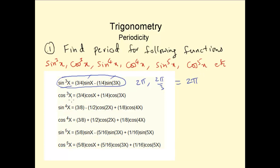Similarly, cos³x: the period for cos³x would be the LCM of the period of cosx and the period of cos3x. The period for cosx is 2π and the period for cos3x is 2π/3. So the period of the whole function cos³x would be the LCM of these, which is 2π again.